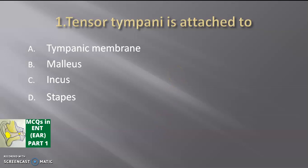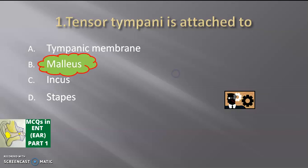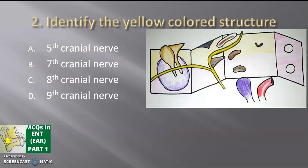Time is up. If you answered malleus, your answer is correct. Next, identify the yellow colored structure in the diagram.